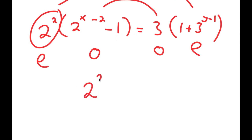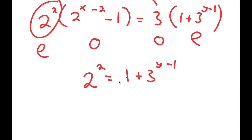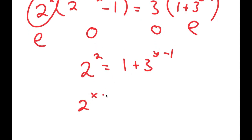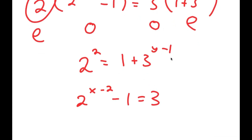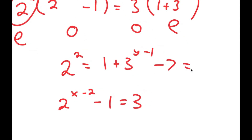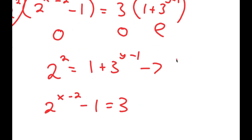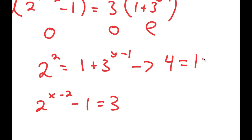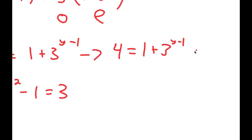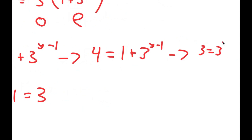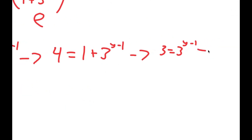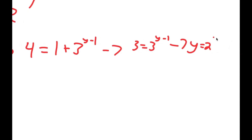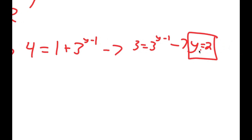I'm going to set the odd numbers equal to each other and the even numbers equal to each other. This gives two equations. First: 2 squared equals 1 plus 3 to the power of y minus 1. That becomes 4 equals 1 plus 3 to the power of y minus 1, so 3 equals 3 to the power of y minus 1, meaning y equals 2.